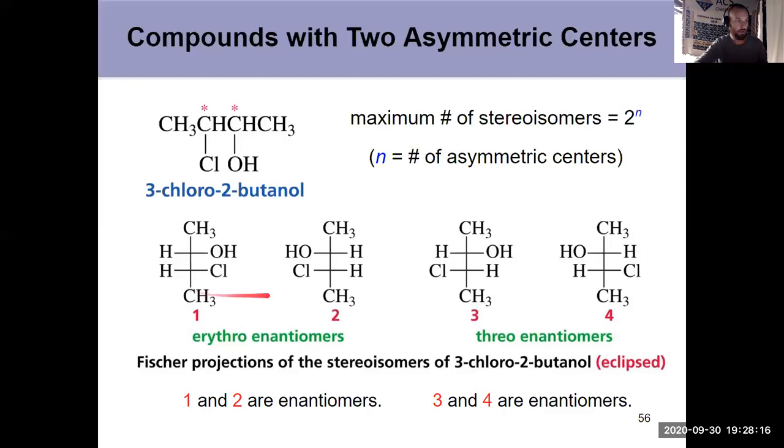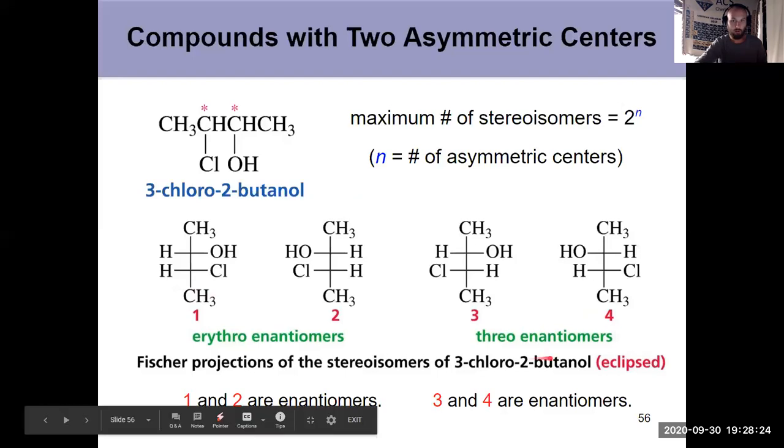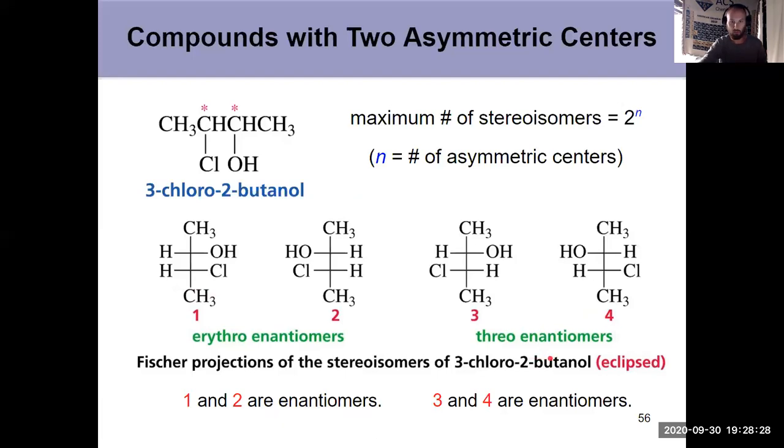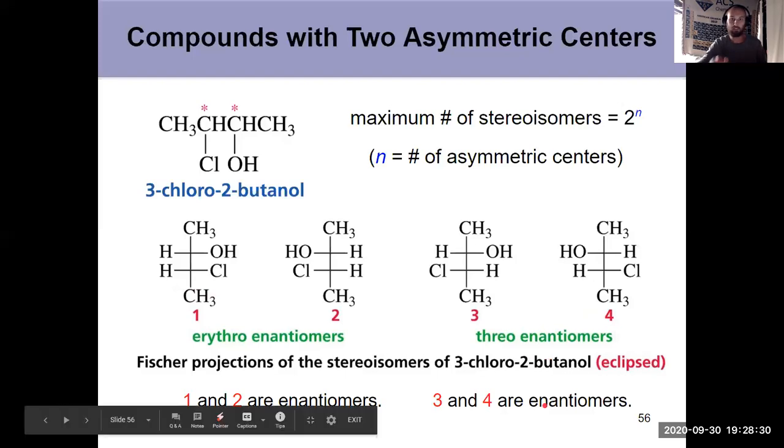So there's a pair over here, one and two. And there's a pair over here, three and four. The relationship among the four, they're all stereoisomers of 3-chloro-2-butanol. And there are two pairs of two enantiomers. The erythro-enantiomers and the threo-enantiomers.